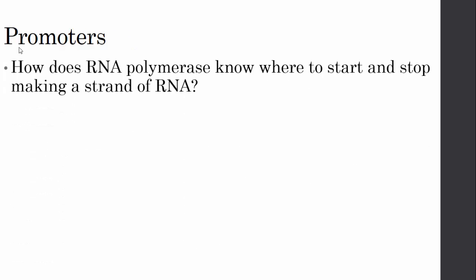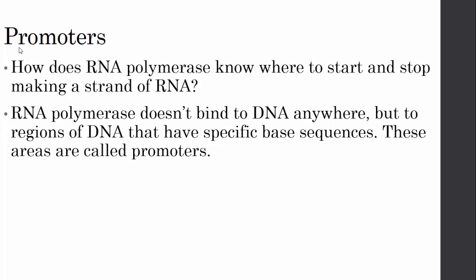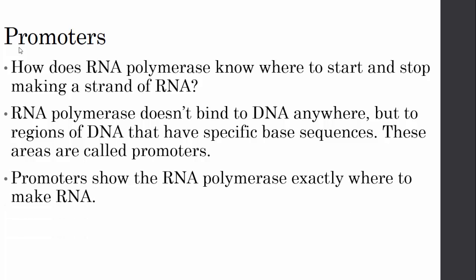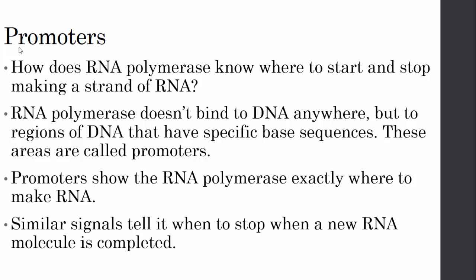Promoters: How does RNA polymerase know where to start and stop making a strand of RNA? RNA polymerase doesn't bind the DNA just anywhere, but to regions of DNA that have specific base sequences called promoters. Promoters show the RNA polymerase exactly where to make the RNA. Similar signals tell it when to stop when a new RNA molecule is completed.